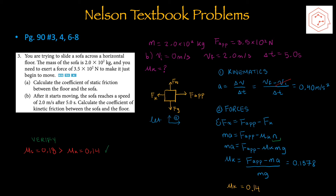We have the same free body diagram as in part a, except the subscript s is replaced with k for kinetic friction. Letting upwards and forwards be positive, we first use kinematics to solve for acceleration: a = Δv/Δt. Since the sofa starts at rest, that gives a magnitude of 0.40 m/s². Applying this to the forces via Newton's second law, the net force in the x component: m₁a = applied force minus mu k times normal force, which equals mg. Isolating for the coefficient of kinetic friction gives 0.14. This makes sense since static friction is always greater than kinetic friction.